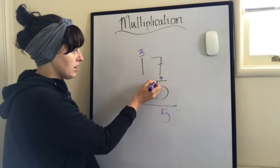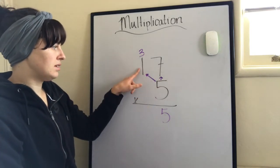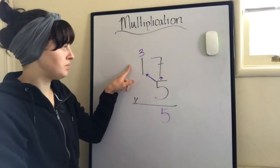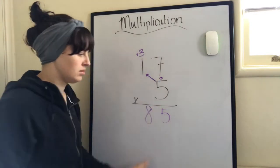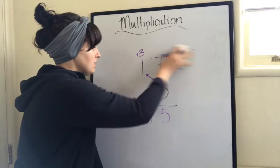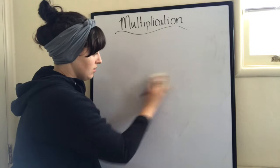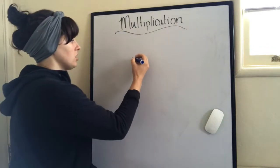Now we take our 5 and we multiply it by the tens place. 5 times 1. 5 plus 3, 8. 85. Right? And we can do this even if our number is very large.